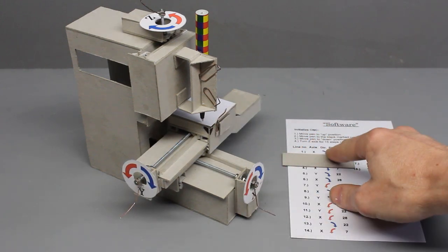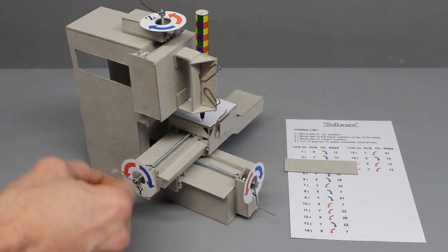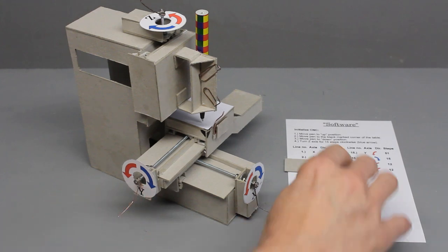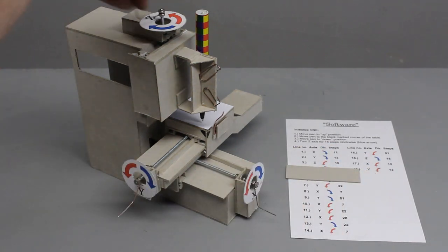There is an even more simple way to use this CNC. It is still driven through 3mm threaded bars, but now they are turned by hand. The software is a set of instructions printed on a sheet of paper.